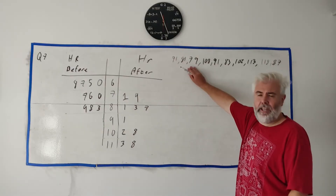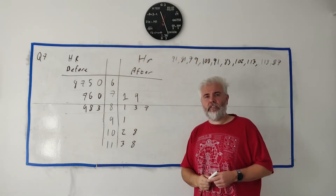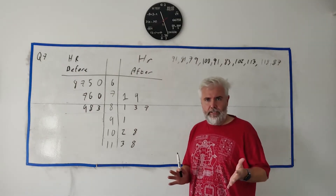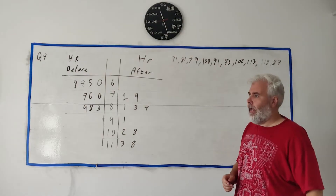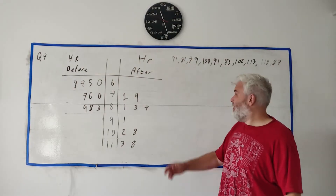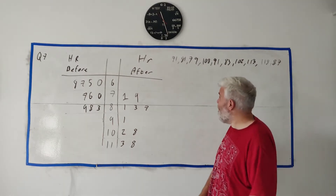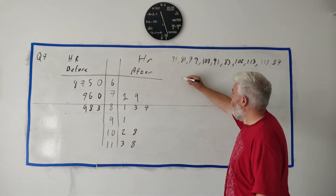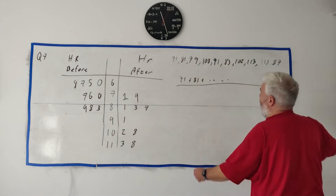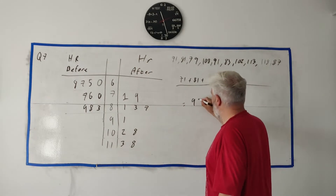For part 2, they remind us of the after exercise numbers and simply ask us to work out the mean and the standard deviation. The mean is straightforward — you just add all the numbers up, 71 plus 81 and so on, then divide by how many there are. There are 10 of them here, so divide by 10, and you get an answer of 93.3.